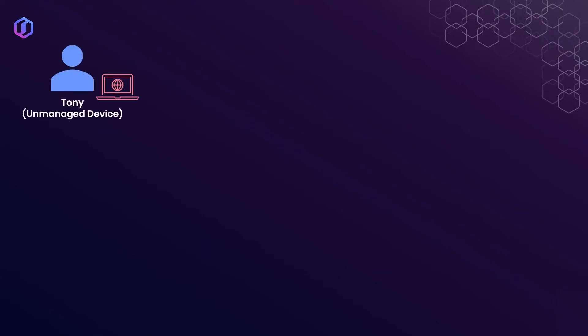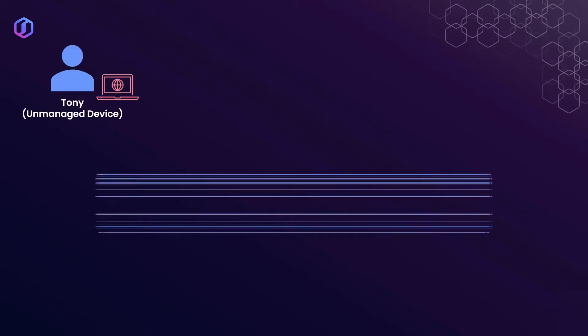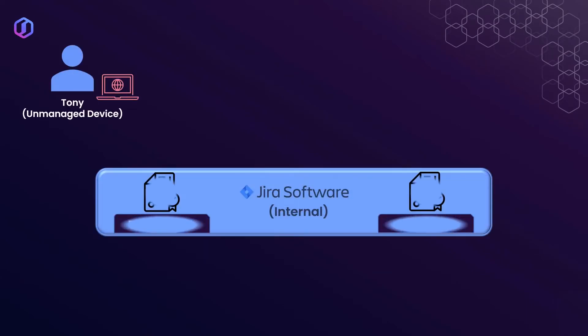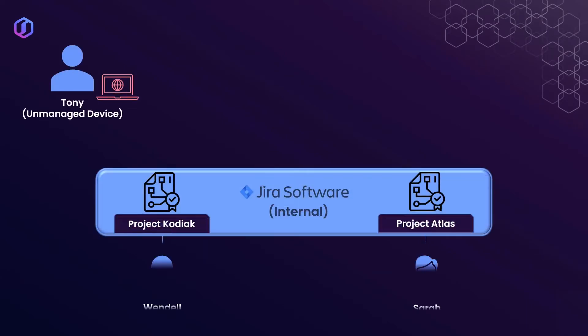In this first scenario, we're going to be following a user named Tony, who's going to access an internal Jira server and he's going to be interacting with two different people through two different projects. The first one is Project Kodiak, a project regarding an existing product where he'll be working with Wendel, a technical support engineer. The other project is Project Atlas, which has to do with an acquisition, where he's going to be working with Sarah from Legal.